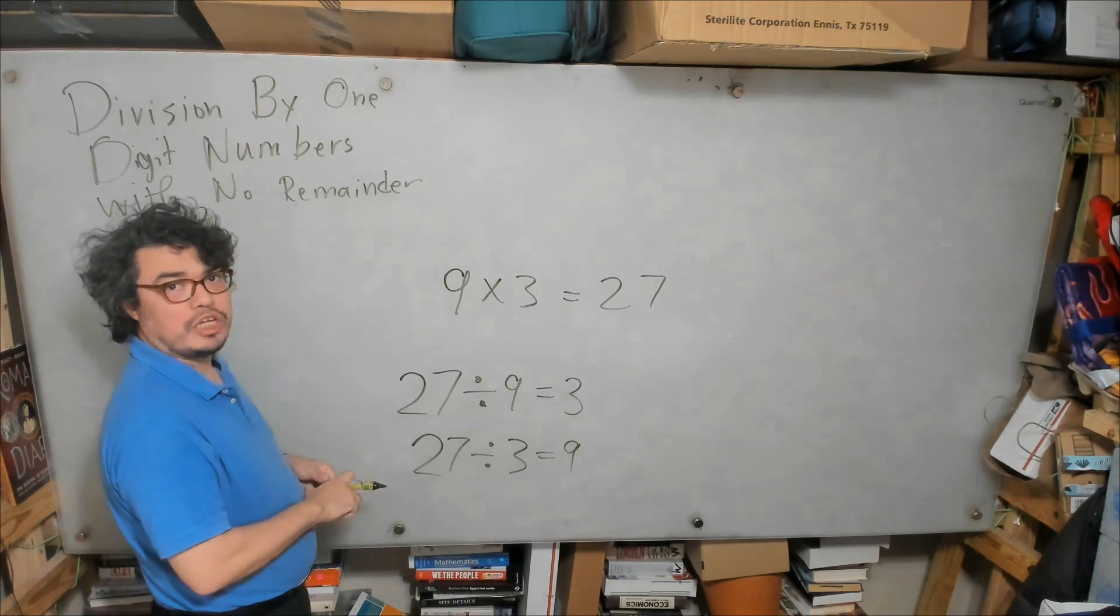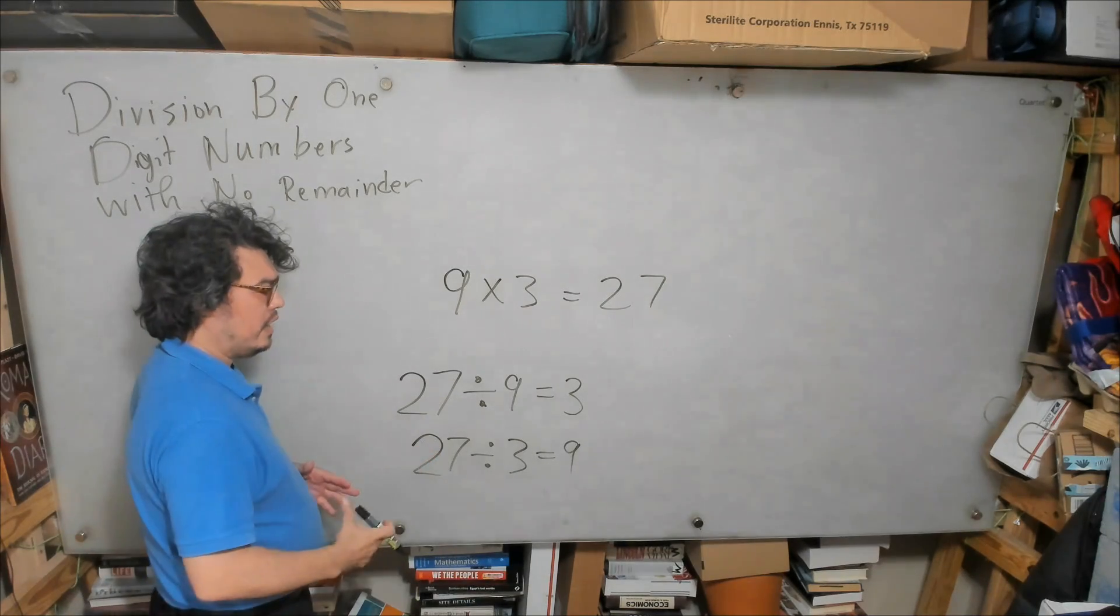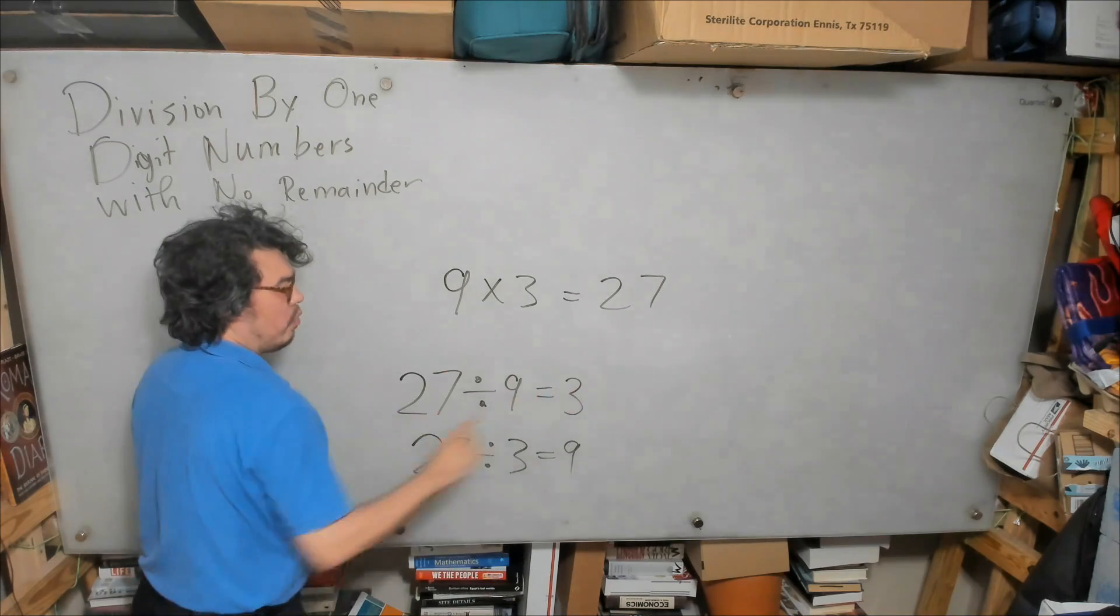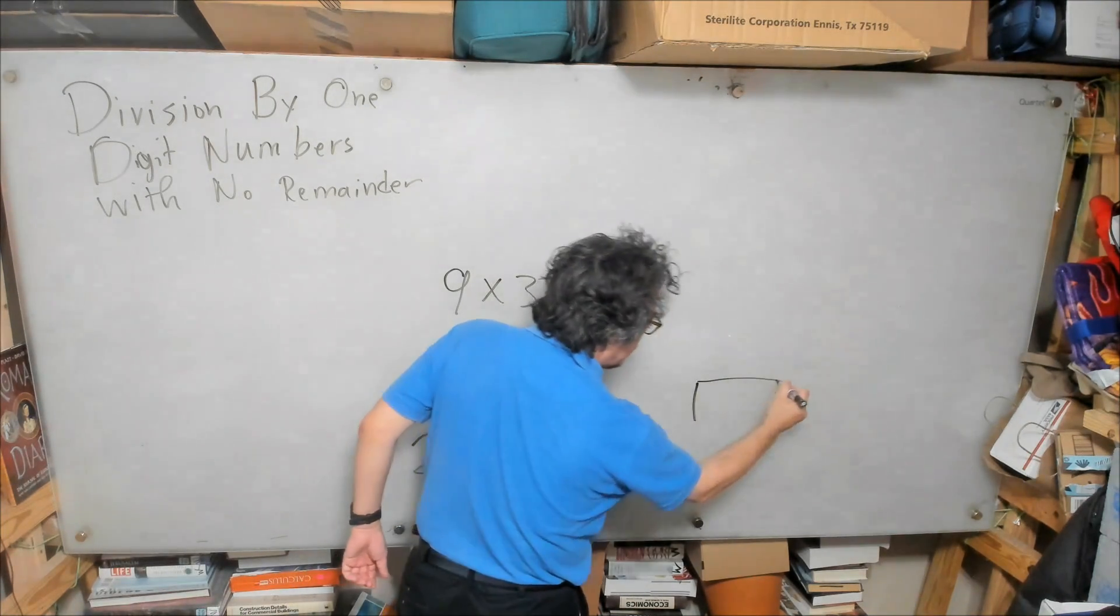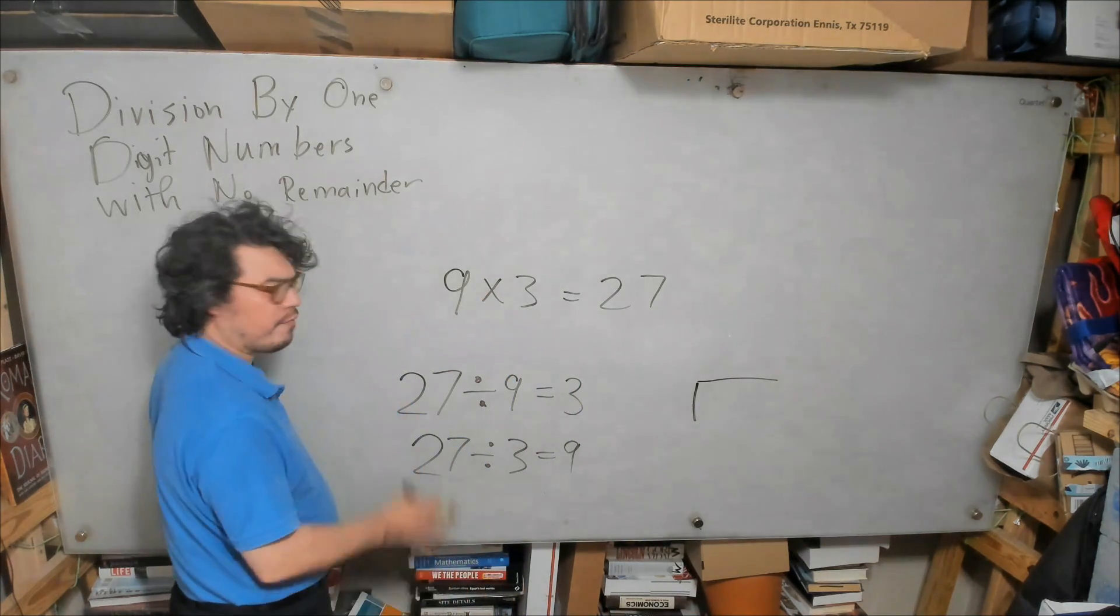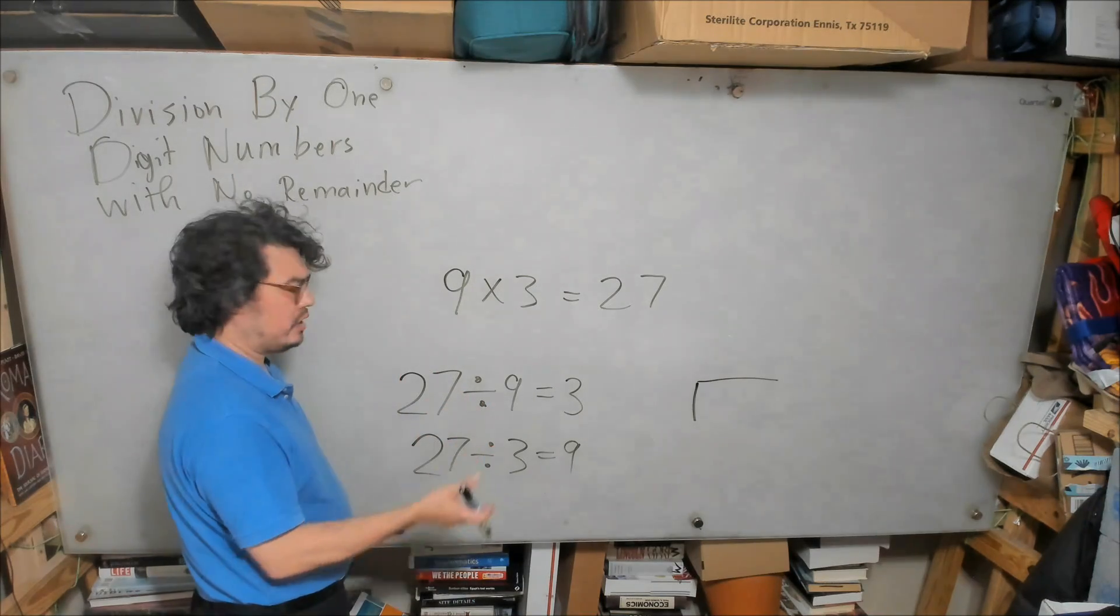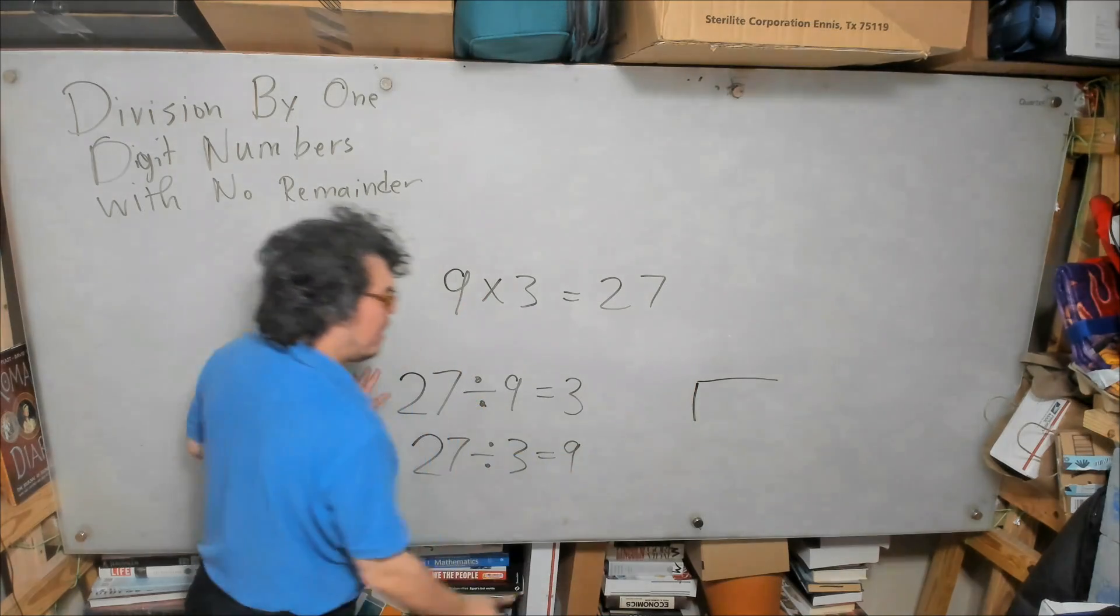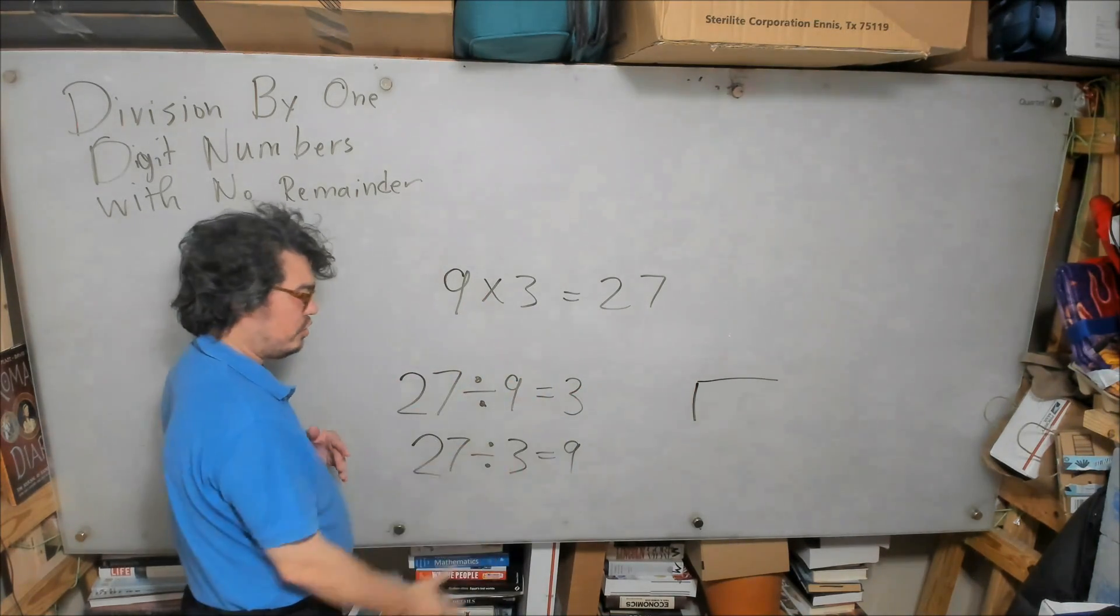Now one of the notations we're going to use a lot whenever we're doing division is the long division house notation. In the first two examples, we're going to be doing examples that come from the multiplication table, so we won't need to write this. But I want to start writing that notation so you can be familiar with both notations.